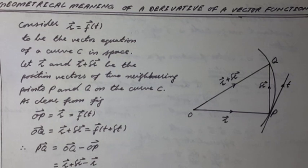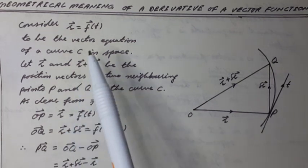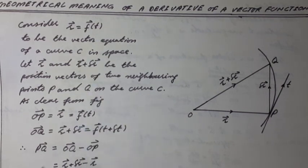As clear from figure, OP vector equal to R vector and R vector is equal to F vector of t. Similarly, OQ vector is equal to R vector plus delta R vector equal to F vector of t plus delta t.